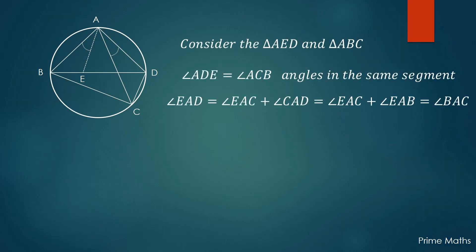Just see that angle EAD is the sum of the angle EAC and angle CAD, but by construction angle CAD is equal to angle EAB, therefore angle EAD is equal to angle BAC.